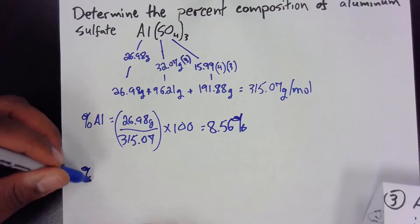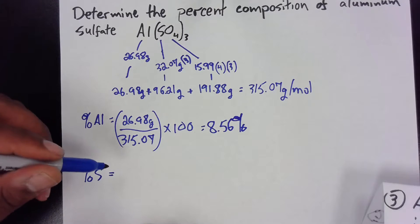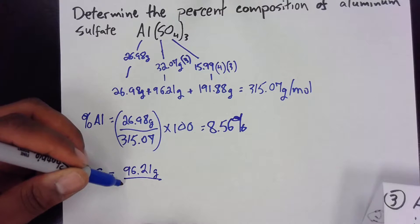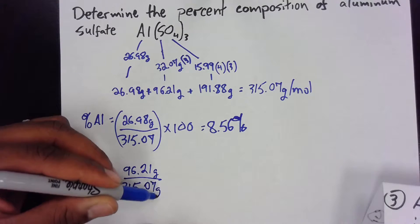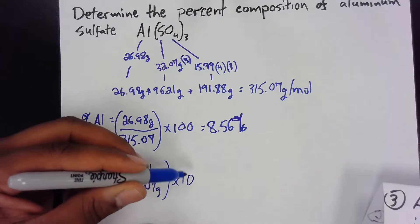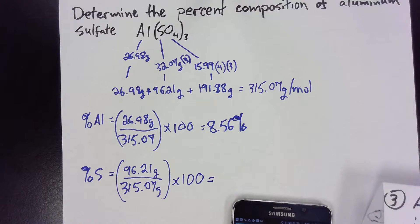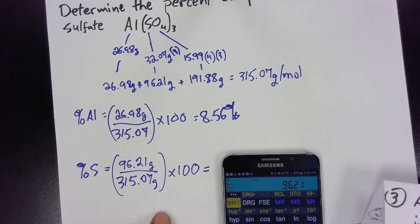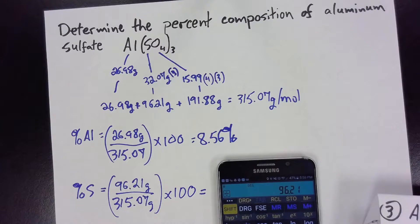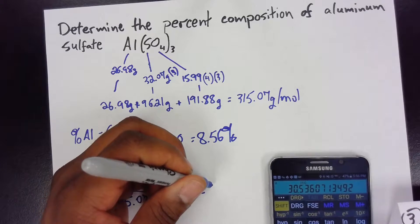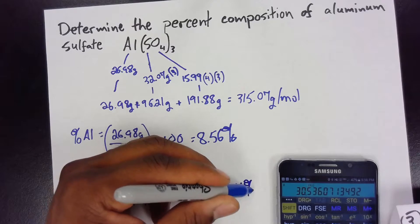Percent sulfur is going to be 96.21 divided by 315.07 times 100. Calculating that: 96.21 divided by 315.07 times 100 is 30.54 percent sulfur.